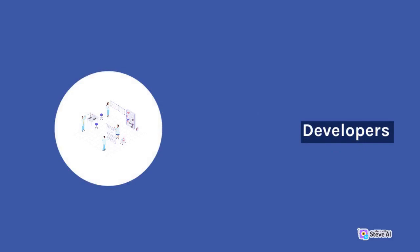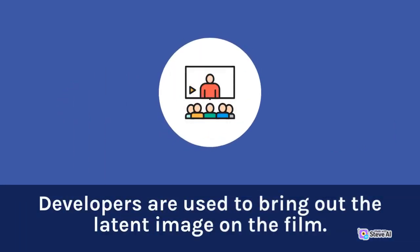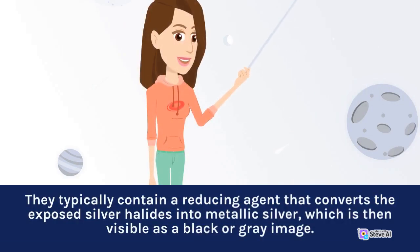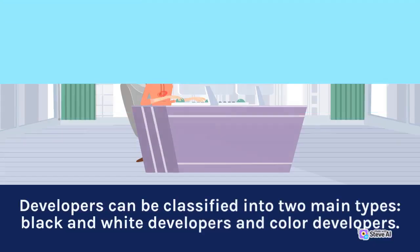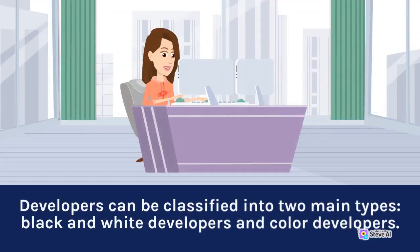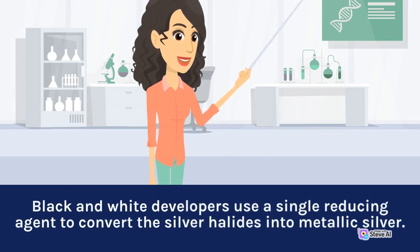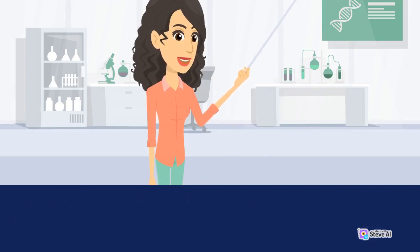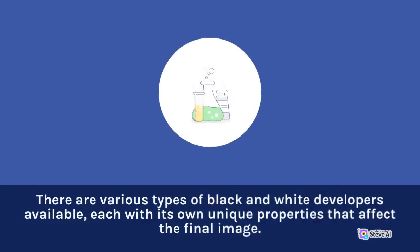Developers are used to bring out the latent image on the film. They typically contain a reducing agent that converts the exposed silver halides into metallic silver, which is then visible as a black or gray image. Developers can be classified into two main types: black and white developers and color developers. Black and white developers use a single reducing agent to convert the silver halides into metallic silver. There are various types of black and white developers available, each with its own unique properties that affect the final image.